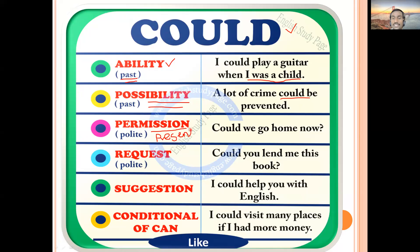For permission, 'could' can be used in the present (not just the past). Example: 'Could we go home now?' — this becomes a kind of permission request in the present. It can also become a request: 'Could you lend me this book?' Then for suggestion: 'I could help you with English' — maybe your friend is struggling with English and you are suggesting your help.